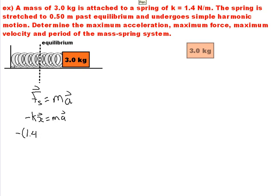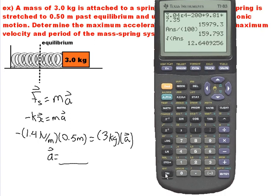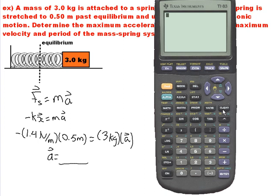So we've got our k, we've got our x, 0.5 meters, we've got our mass, 3 kilograms, and we're going to solve for a. So we'll grab a handy dandy calculator and see what we're going to get here. Now, one thing that's interesting to note is we're going to get a negative acceleration.